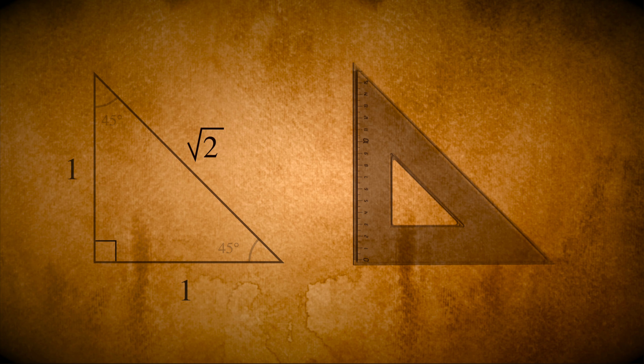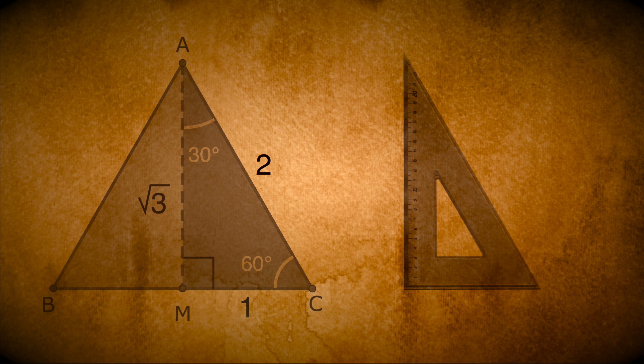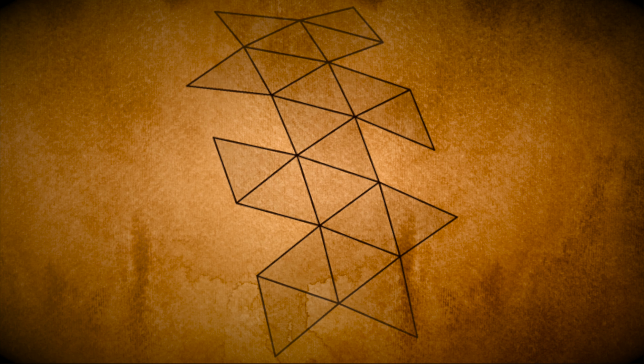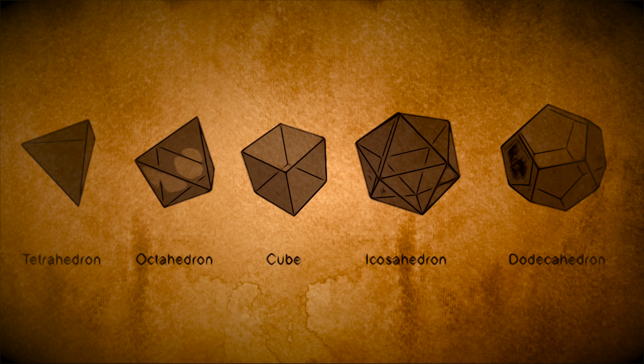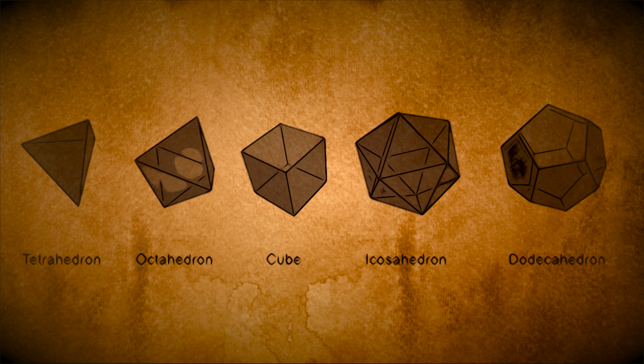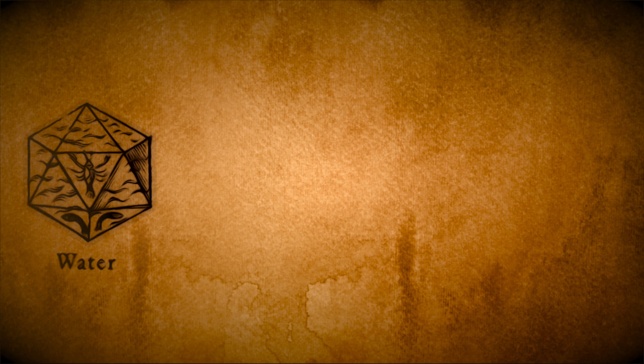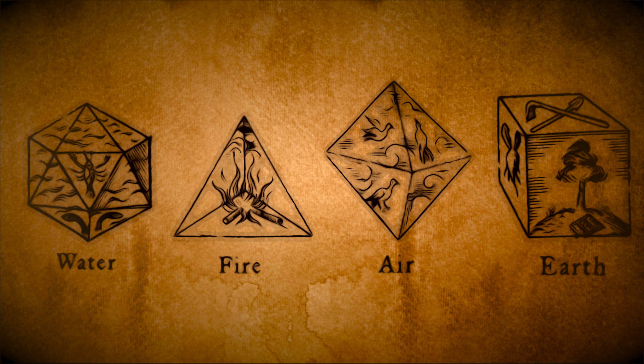Plato's elementary particles were not atoms. While not atoms in name, Plato's ideas about elements and platonic solids fall into the same category. Using 45-45-90 and 30-60-90 right triangles as his fundamental building blocks, it is possible to create all five platonic solids. In Plato's thinking, these solids are the mathematical foundations of the world, and humans perceive them as the basic four elements: water, fire, air, and earth. All earthly objects contain different portions of these elements according to their nature.